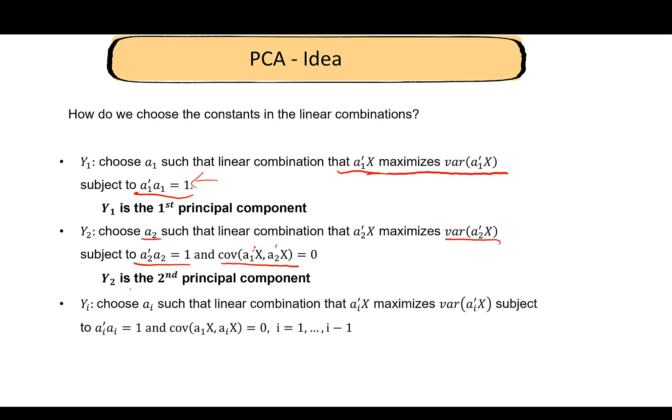In general, for Yᵢ, we choose this vector aᵢ to maximize the variance of this linear combination subject to the condition that the norm of vector aᵢ is 1, and Yᵢ is uncorrelated with all of the previous principal components. So covariance of a₁ᵀx and aᵢᵀx is 0 for i going from 1 to i minus 1. Yᵢ is uncorrelated with all previous principal components, and Yᵢ is the ith principal component.